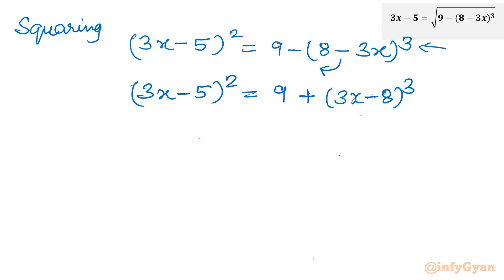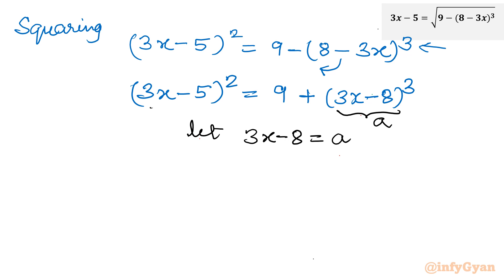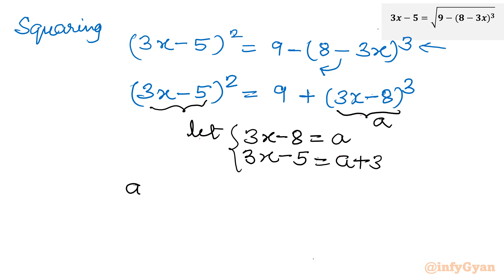In the brackets we can see (3x minus 8) appearing, so let us use the substitution: let 3x minus 8 equal to a. Then 3x minus 5 equals a plus 3 (adding 3 to both sides). Substituting both values into the equation gives (a plus 3) whole square equal to 9 plus a cubed.